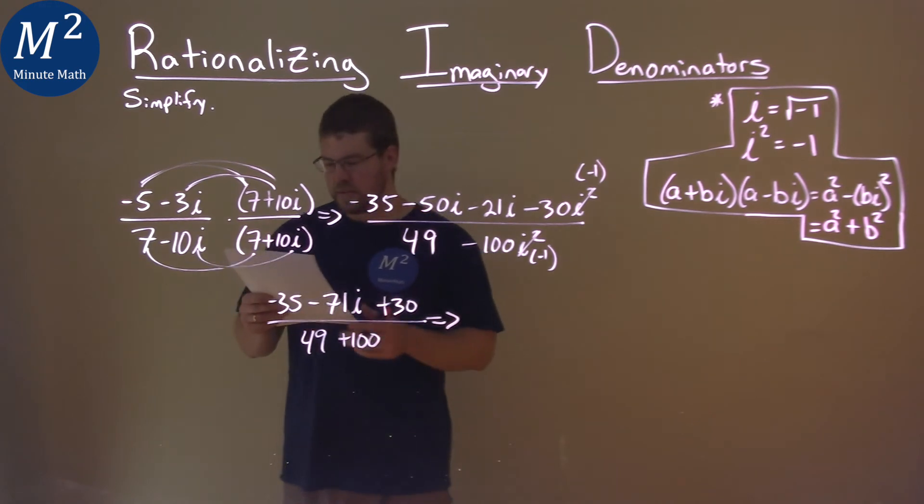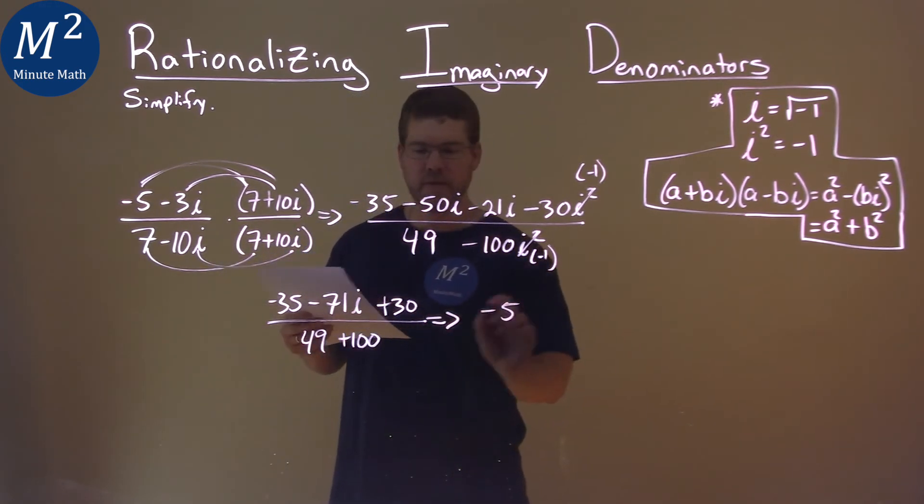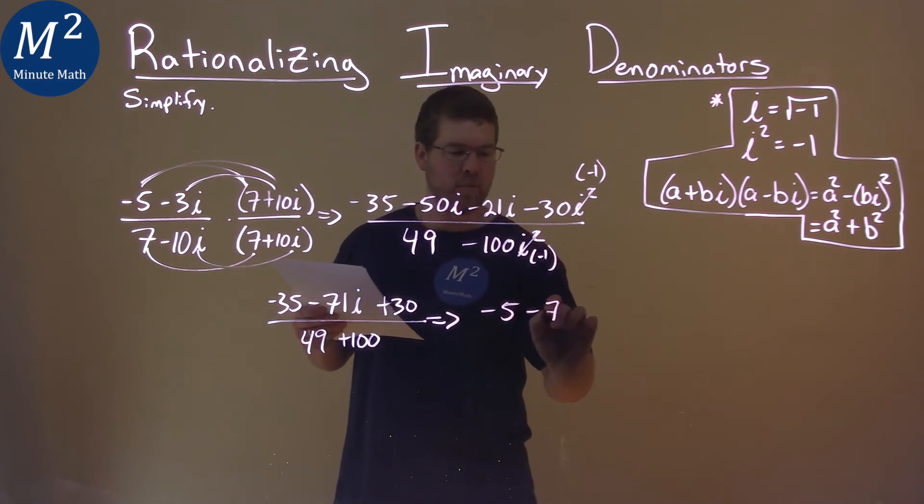Let's keep going, combining our like terms here. Negative 35 plus 30 is negative 5. We still have the minus 71i up here. Over 49 plus 100 is 149.